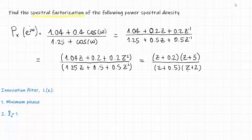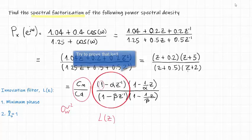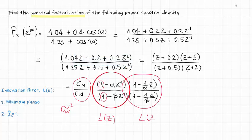So, ideally we want to rewrite our power spectral density in this form, where this part is the input noise variance. This part is our innovation filter L of Z. And notice that because we write it in this form with 1 minus the zero at the numerator and 1 minus the pole at the denominator, this means that the first filter coefficient is 1. And finally, this part is L of Z to the power of minus 1.